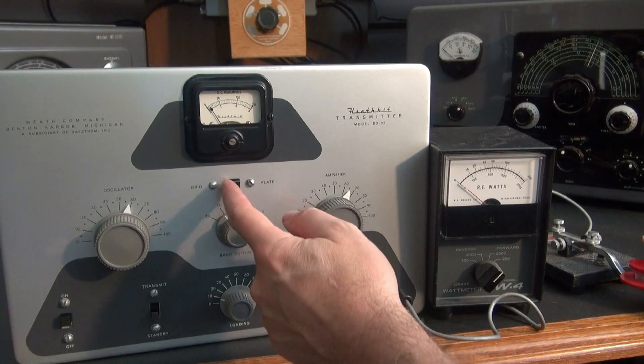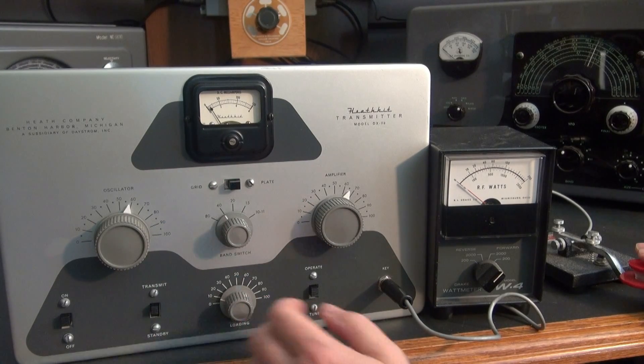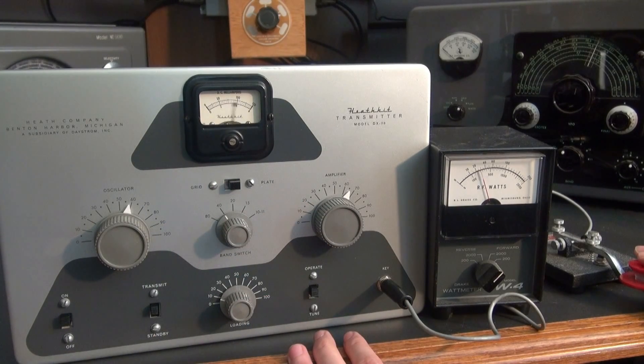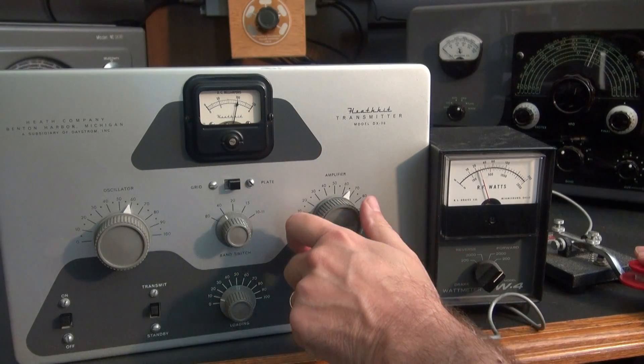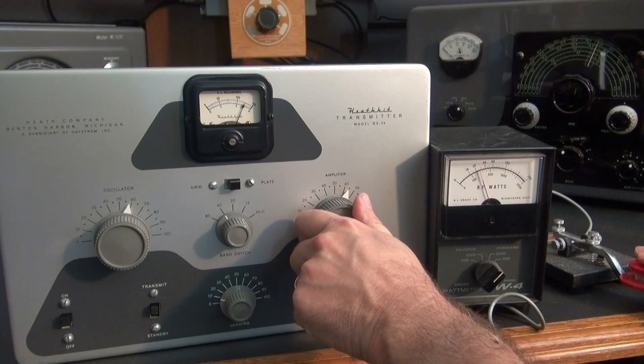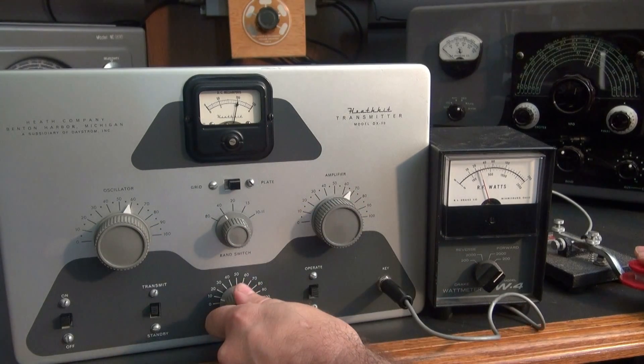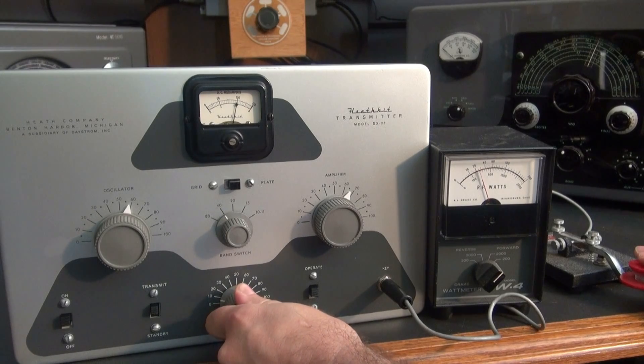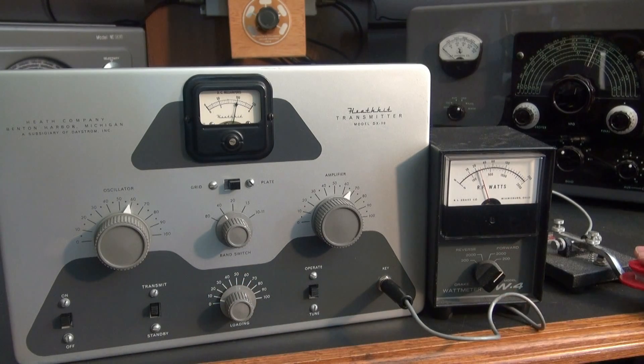So let's go into plate mode. Transmit. Key it up. You can see my plate current now is down where it should be and I can dip it. Plus, I can adjust my loading and get more output and you can see the power. We're good to go.